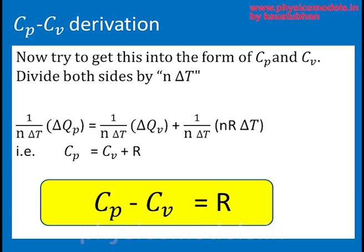So divide both sides of the equation by n delta T. So R will remain alone on the right hand side, and the other terms will become same as Cp and Cv, which is the heat required per mole per degree rise in temperature. So that way you'll get Cp is equal to Cv plus R, which means that Cp minus Cv is equal to R.